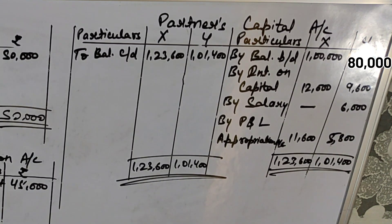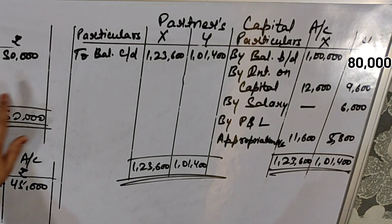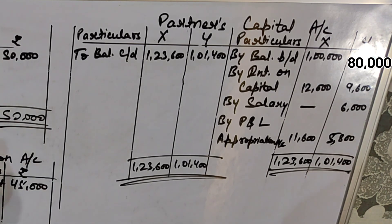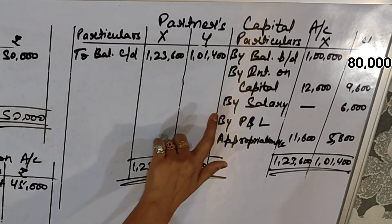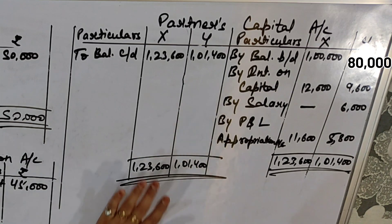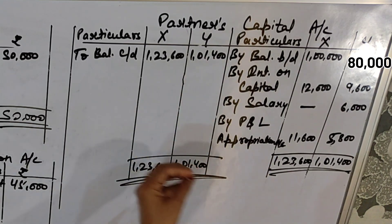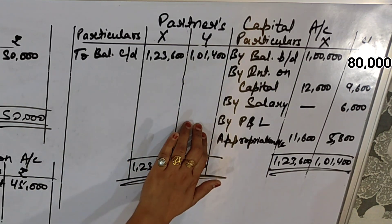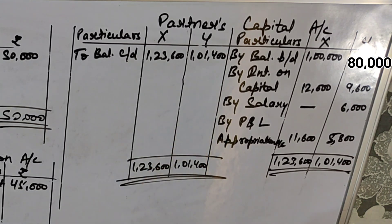So students, we have completed question number 6. The key learning: when a manager's commission is given, we make a separate Profit and Loss Account. It is calculated on profit, and after deducting it, the net profit is transferred to the Appropriation Account. In the Capital Account, manager's commission does not appear — only partner-related incomes and expenses are recorded there. In the next video, we will do the next question. If you liked the video, please like, comment, and subscribe to my channel. Thanks for watching.